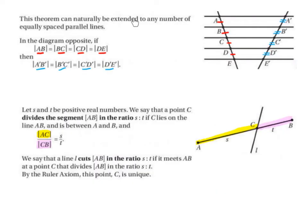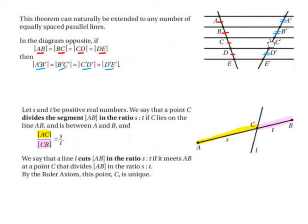This theorem can naturally be extended to any number of equally spaced parallel lines. In the diagram, if AB equals BC equals CD equals DE, with equal widths marked in red, then A'B' equals B'C' equals C'D' equals D'E', shown with two little lines representing equal length.